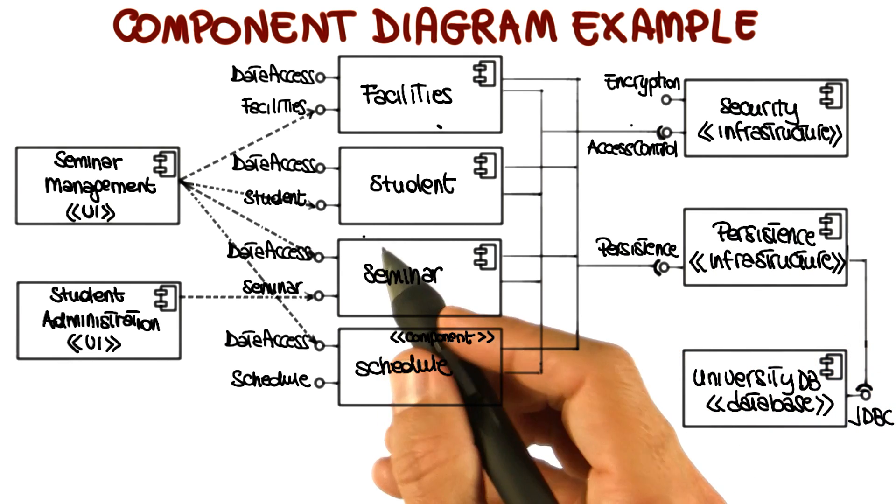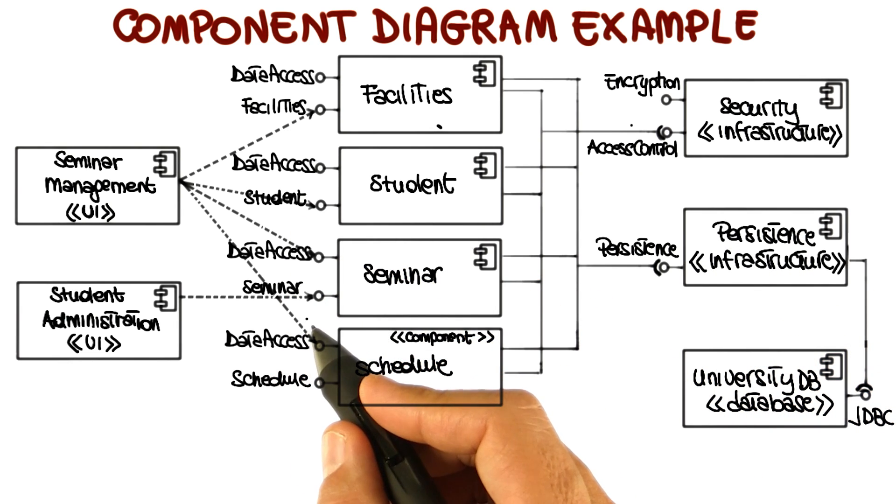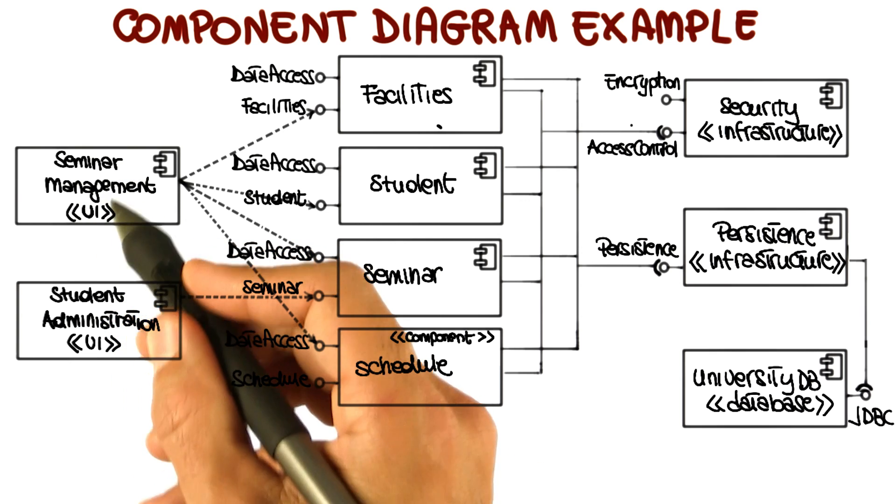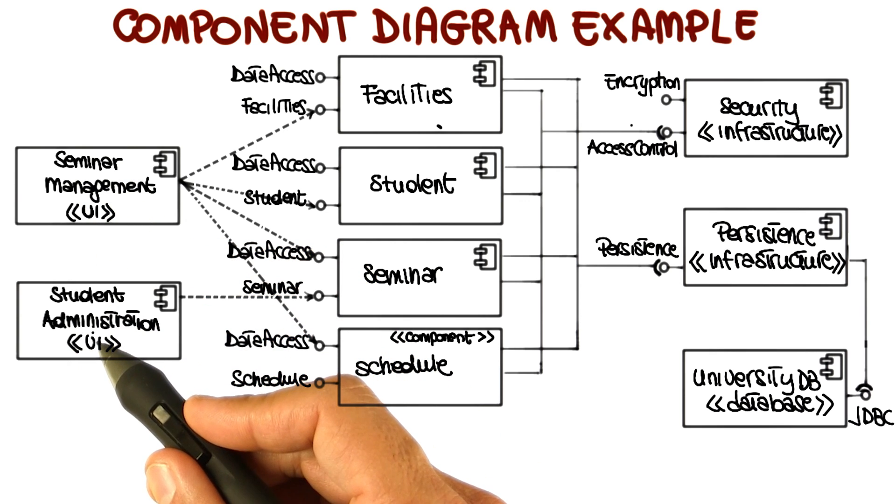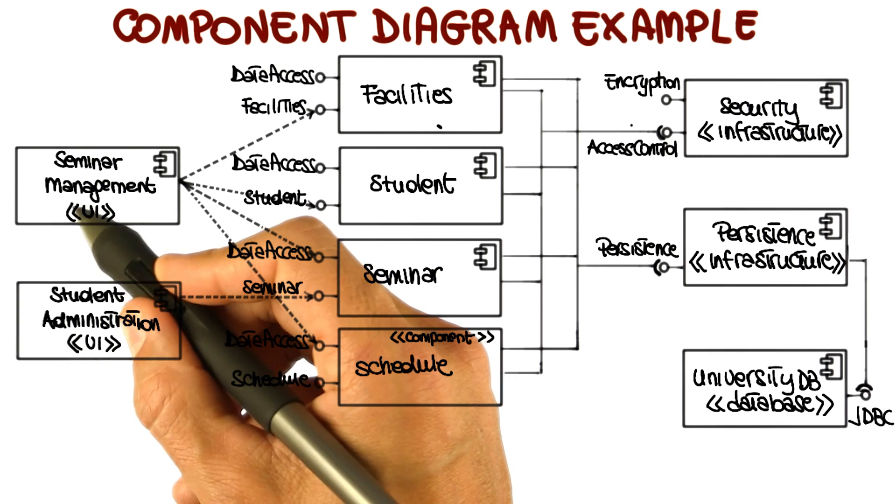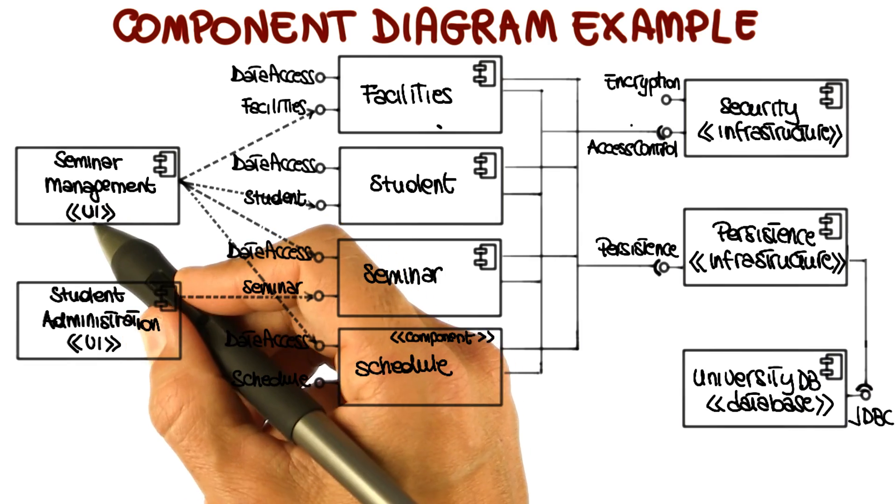Last thing I want to note is that components or relationships can be annotated. So for example, if we look at the seminar management and the student administration components, you can see that they're annotated here to indicate that they're user interfaces.